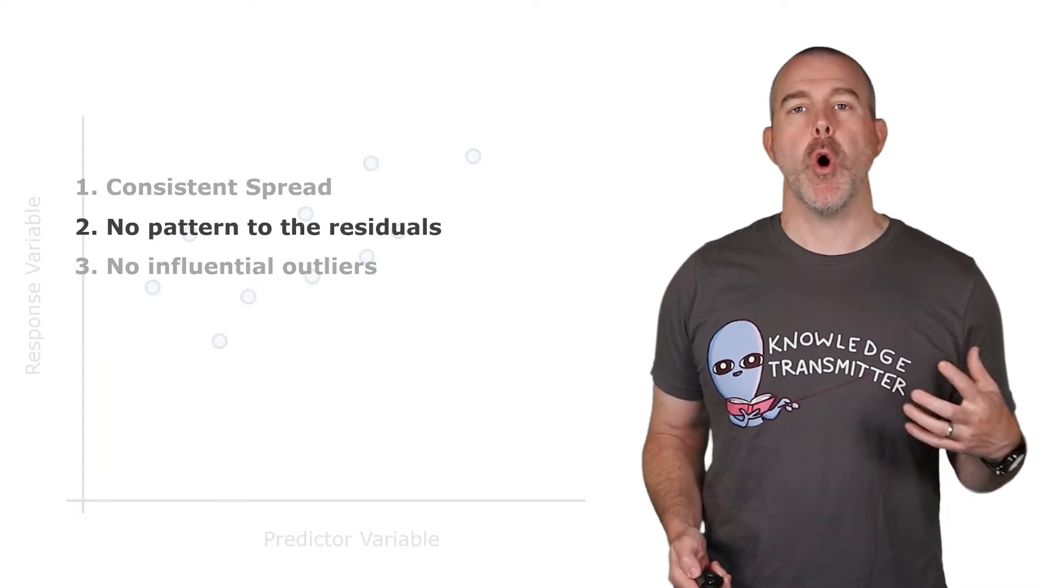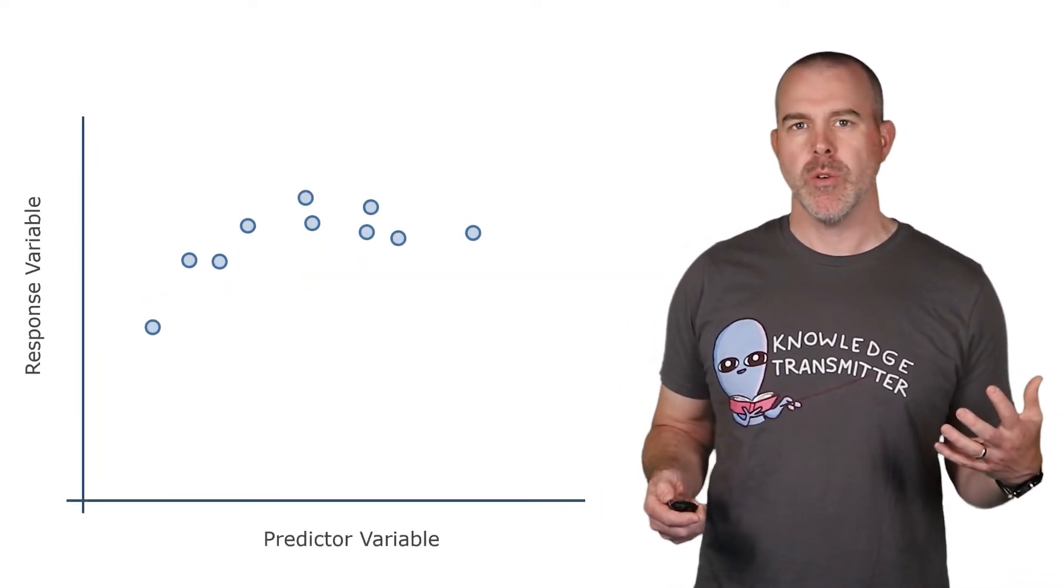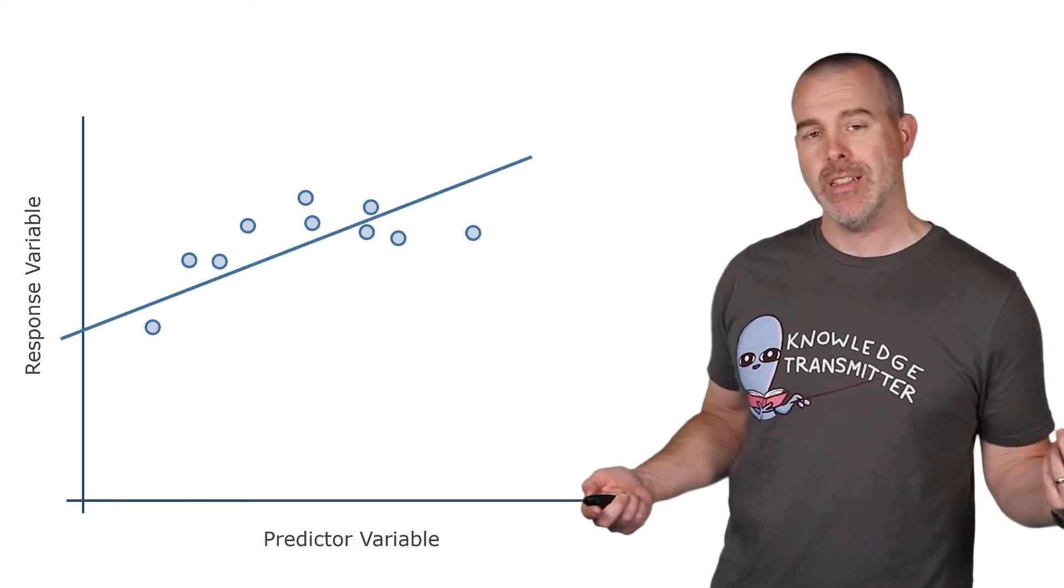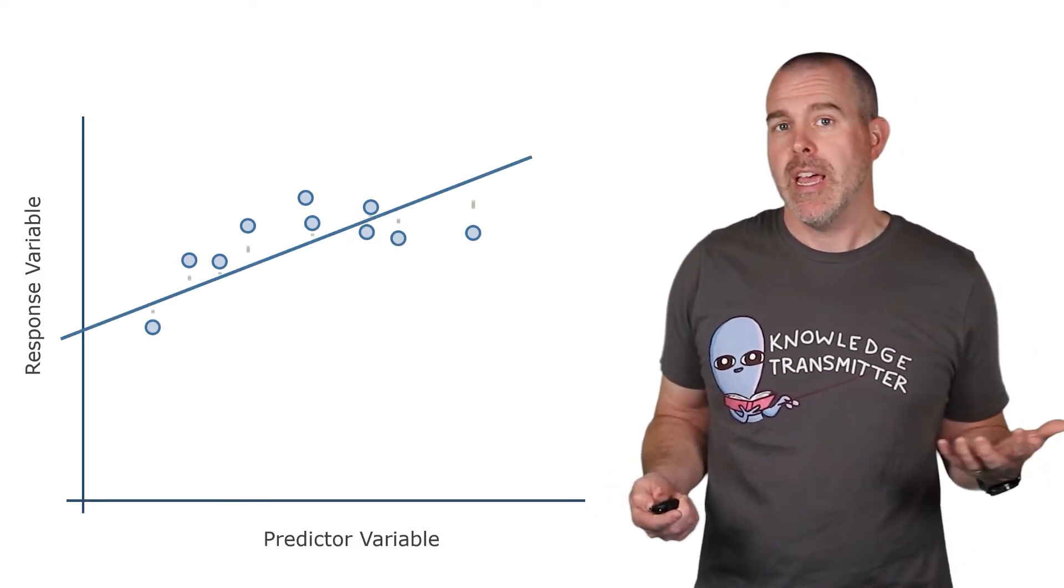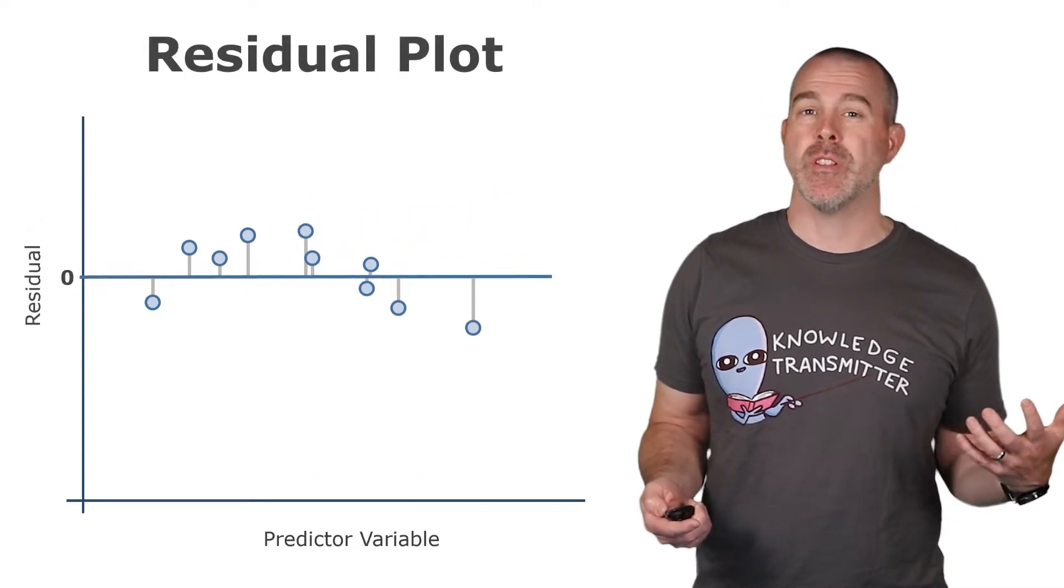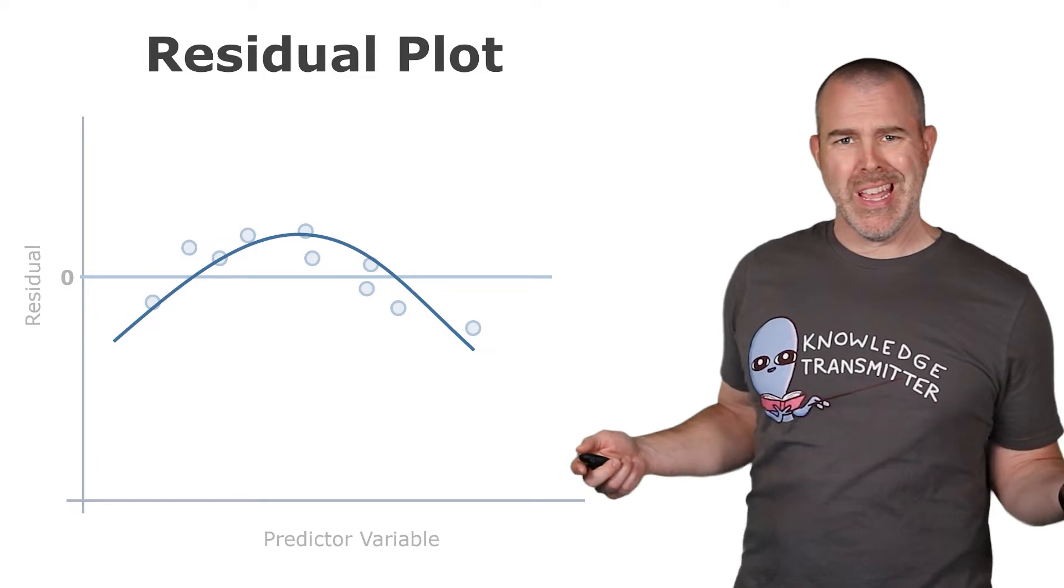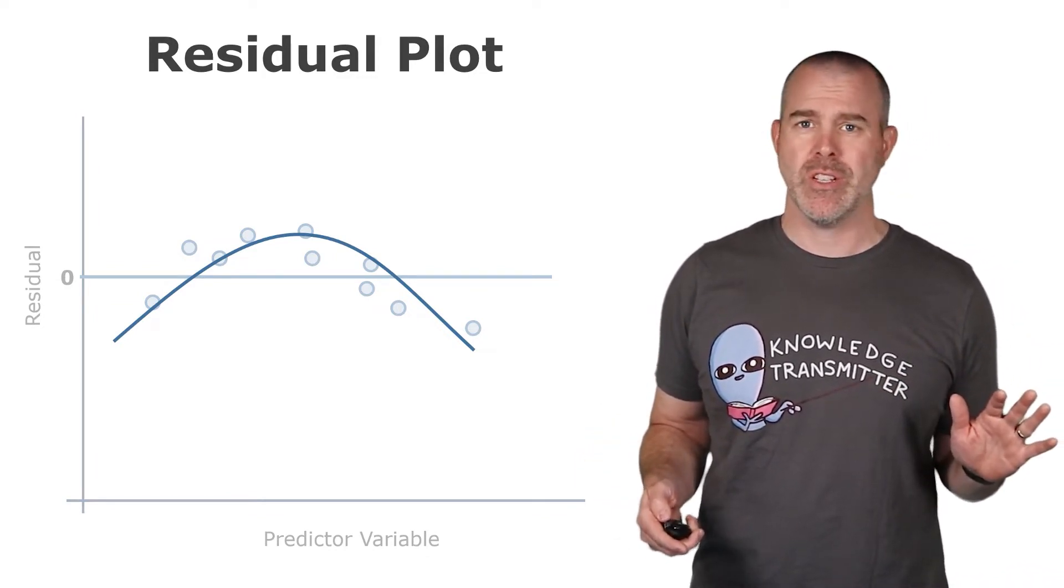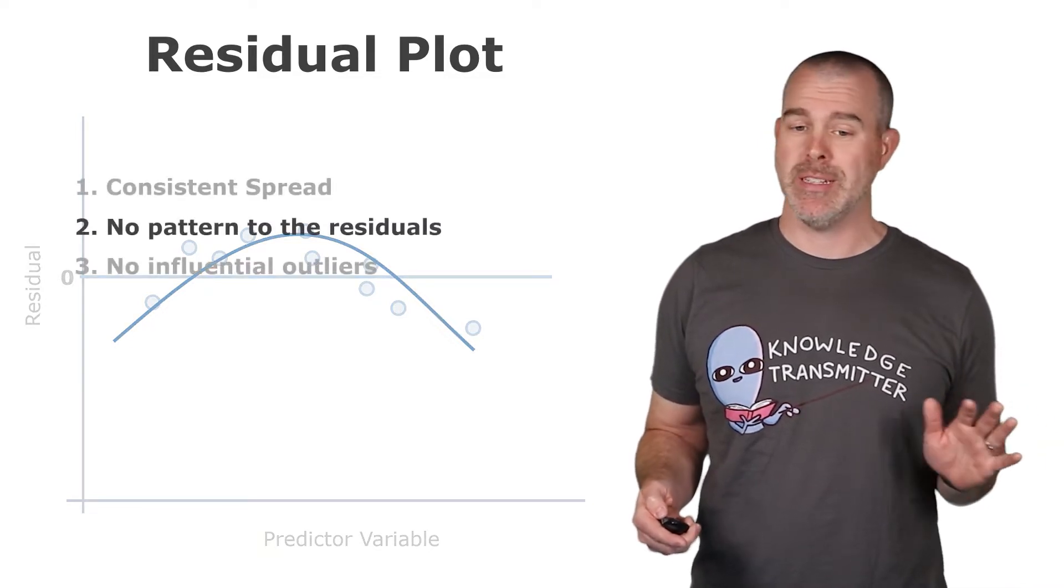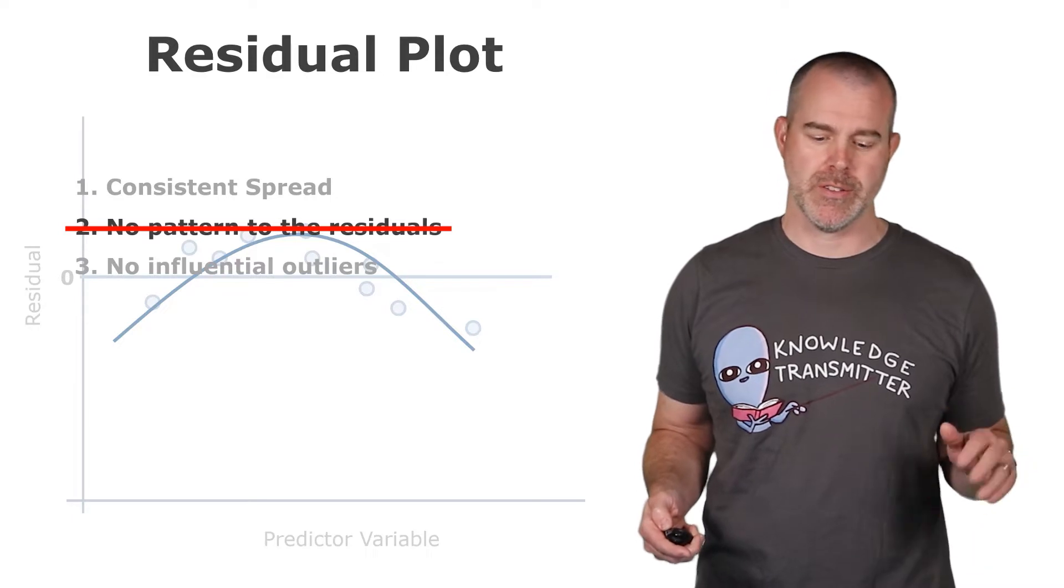Second thing we have to have is no pattern to the residuals. Let's say the data looks something like this. A linear model kind of fits. If we look at the residuals and make the residual plot, though, pretty clear there's a parabolic curve or something there. There's patterns in those residuals, that's not good. That means a linear model is not good.